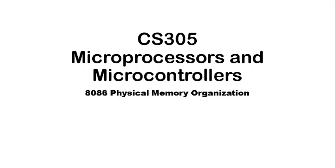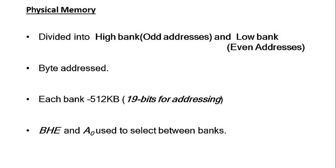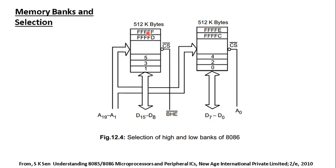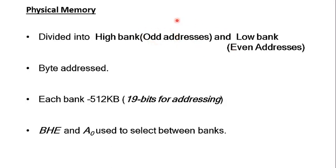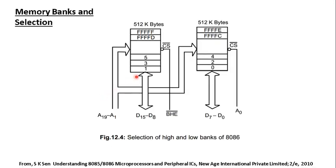In 8086, the memory is divided into two banks: a high bank and a low bank. The high bank stores odd-addressed bytes while the low bank stores even-addressed bytes. Each bank is 512 KB in size, so the high bank contains only odd-addressed bytes and the low bank contains only even-addressed bytes.